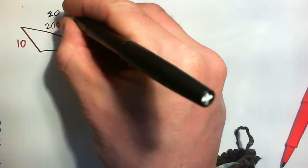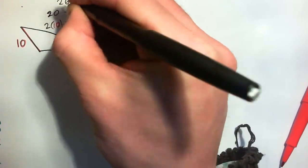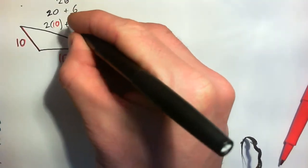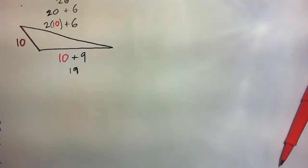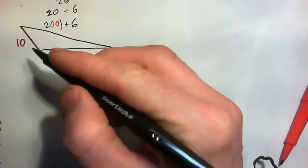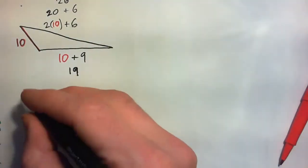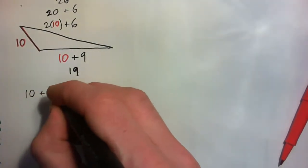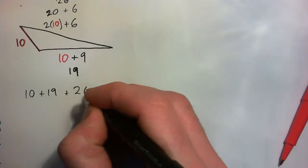Isn't that just 20 plus 6? 26, isn't it? So it's 2 times 10 plus 6. Agreed? So what I'm saying to you is if the shortest side was 10, the other sides would be 19 and 26. And we have it there, 10 plus 19 plus 26.